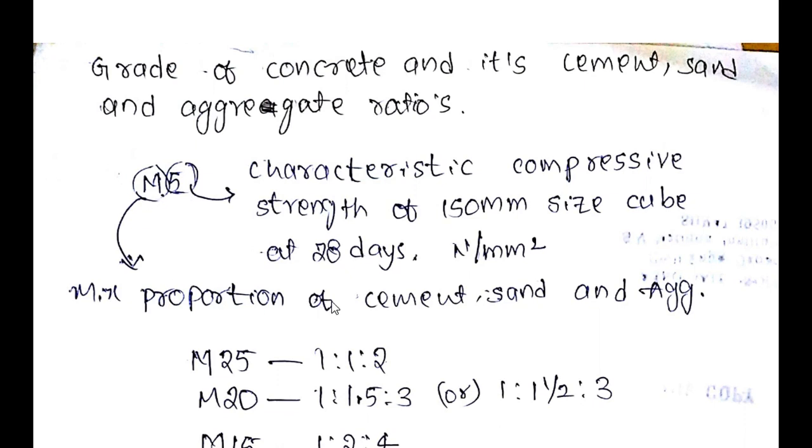Where M stands for mix proportion of cement, sand, and aggregate, and the number stands for characteristic compressive strength of 150 mm size cube at 28 days, measured in terms of Newton per mm square or mega Pascal.